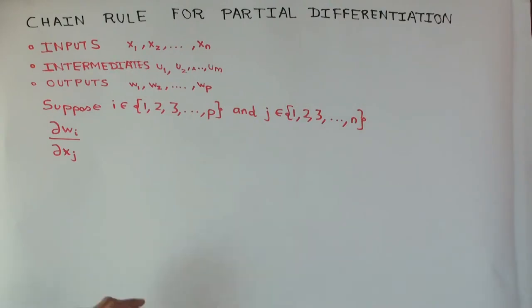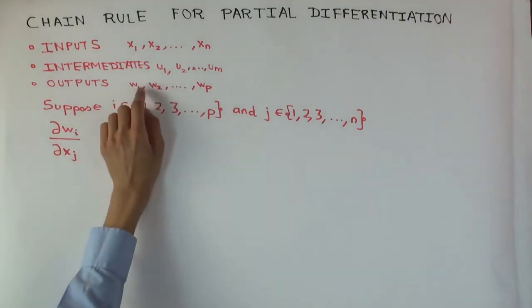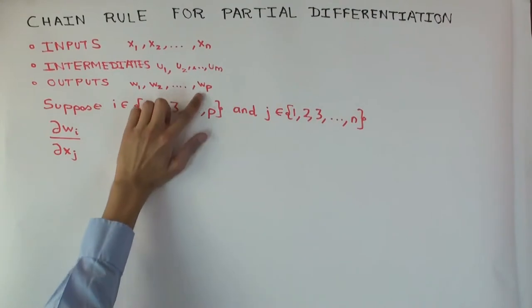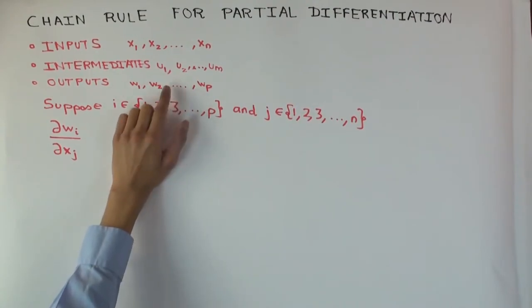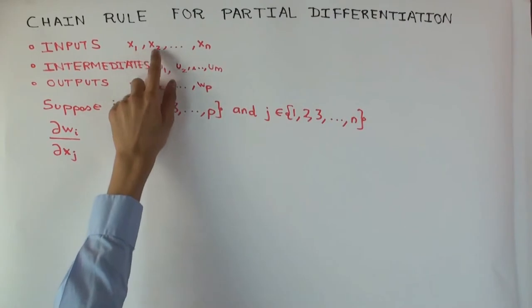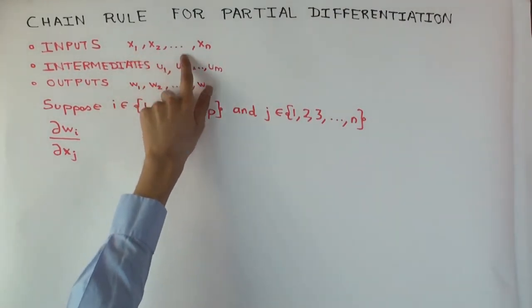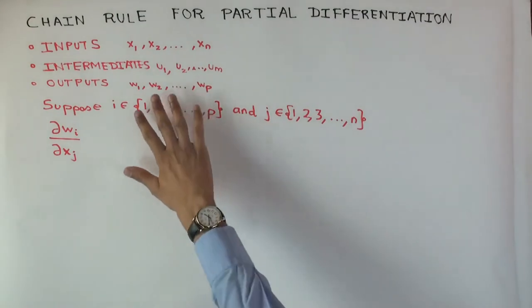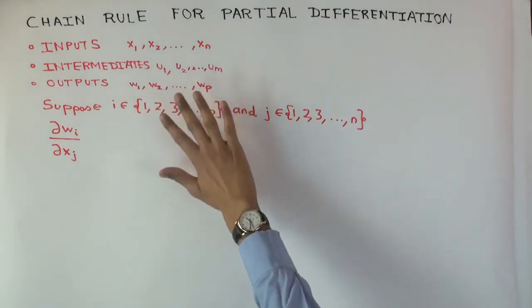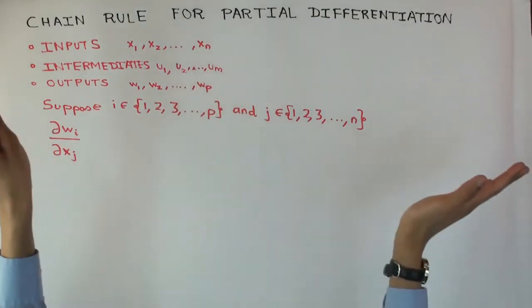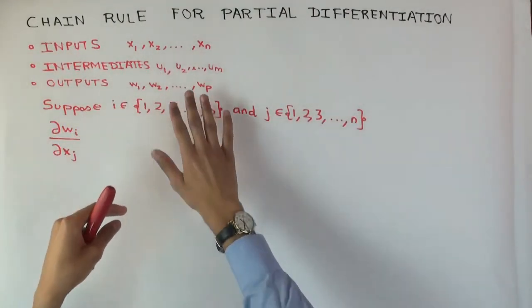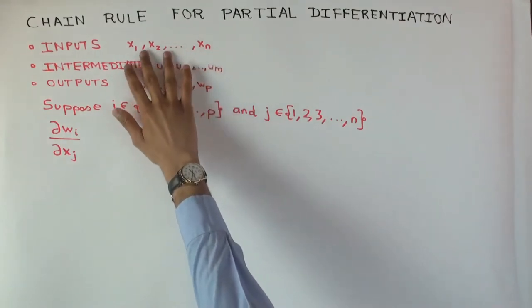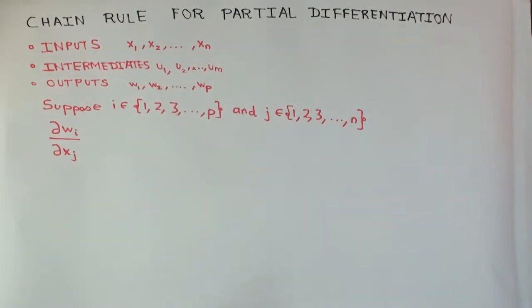There's something interesting: the number of outputs doesn't affect the complexity of what you're doing. Multiple output is not an issue because you can just study each one individually. The real complexity arises if you have multiple inputs. The complexity comes from the fact that you have multiple inputs here and multiple intermediates here.